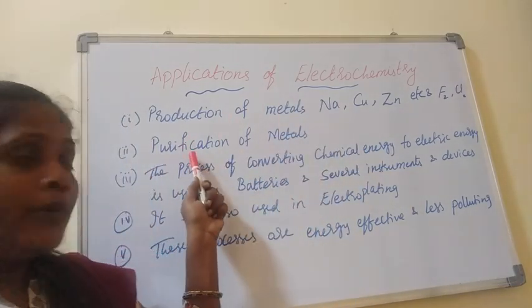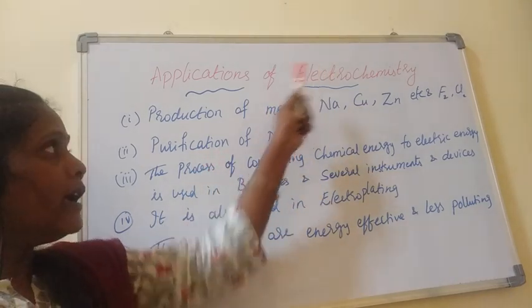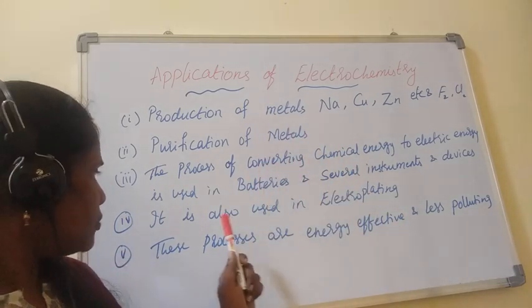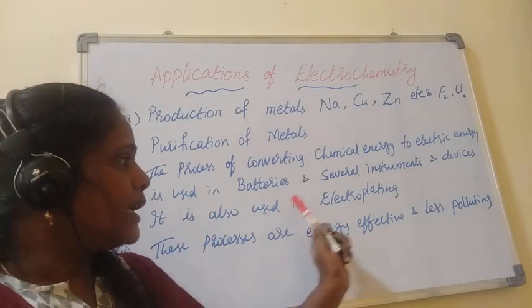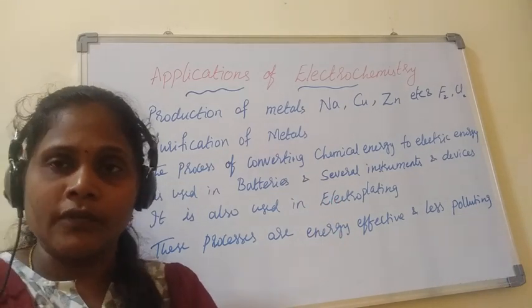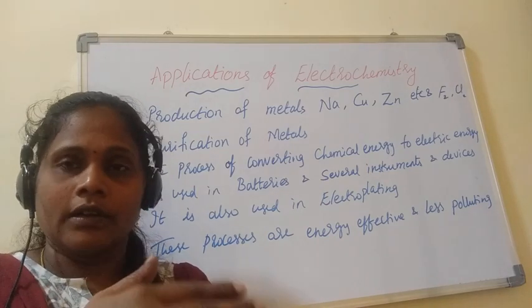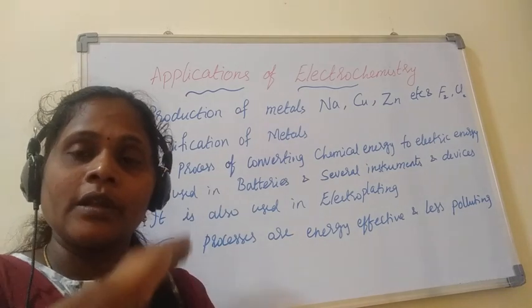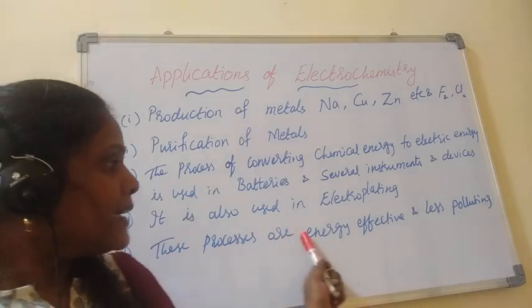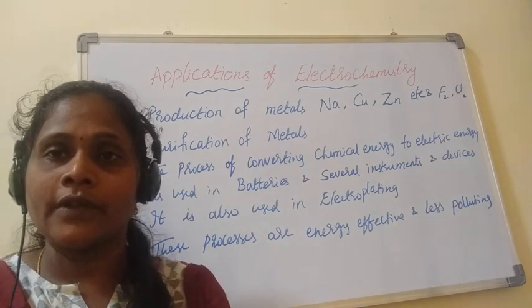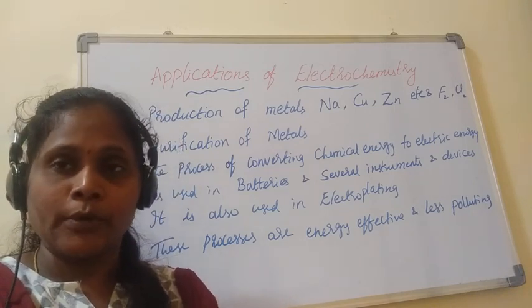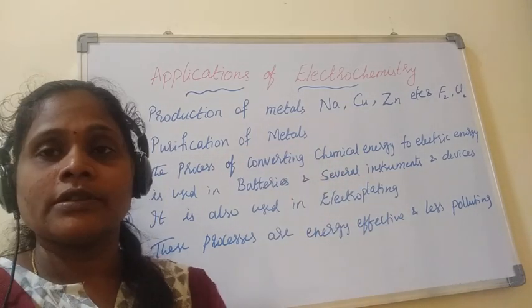Electrochemistry is also used in instruments and devices requiring conversion of chemical energy to electrical energy. It is also used in electroplating — coating one metal on another directly using electrolysis. These processes are energy-effective and less polluting, which is very essential now since any process or device that produces less pollution is most important. So these are all the applications of electrochemistry.